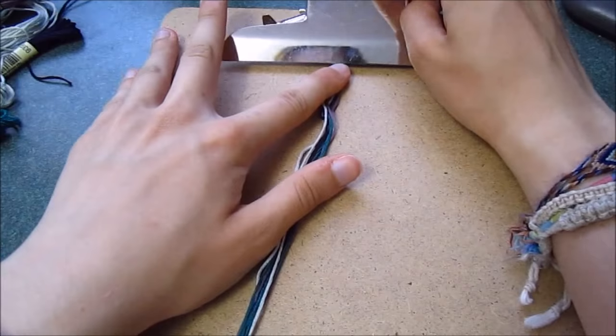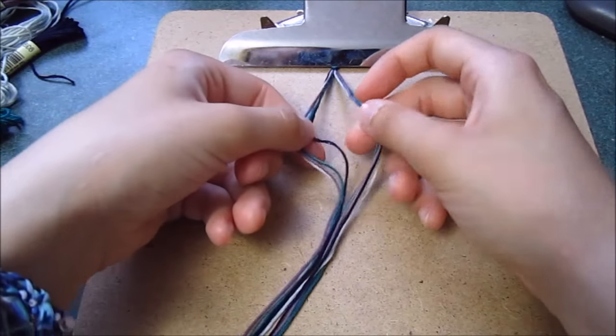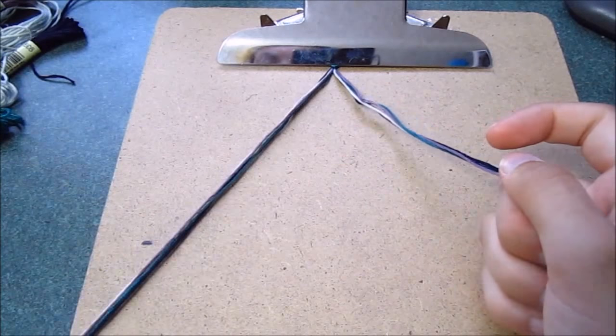Clip your knot to the clipboard and divide the strings in half so that one of each color is on each side.